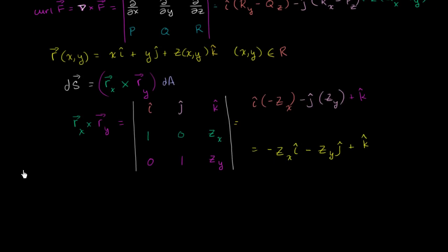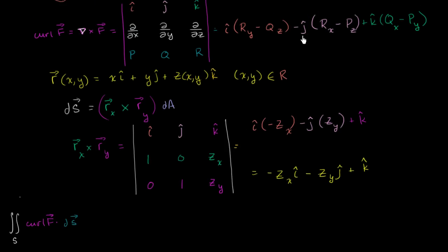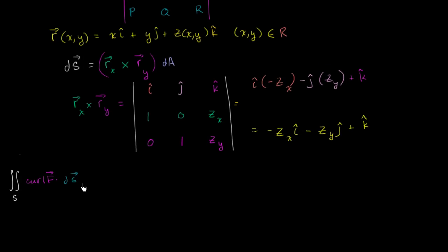Our surface integral — I'm just going to rewrite it down here — it's the surface integral over our surface of the curl of F dot dS. We've already figured out what our curl of F is from two videos ago, and we've almost figured out what dS is. dS is the cross product of these two vectors times dA. The cross product of these two vectors is the result shown here, so dS equals that quantity times dA — the cross product of the partial of R with respect to x and the partial of R with respect to y, multiplied by dA.